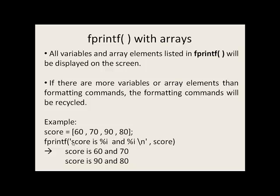Let's try to execute this fprintf command. We say score is %i — this is the first time we've seen a percent, so the first item in score is inserted here, so 60 is inserted into this location. And %i — this is the second time that we've seen a percent, so the second element in score, which is 70, is inserted here.